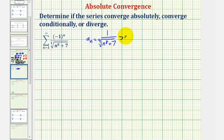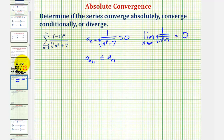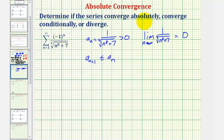Notice how a sub n is greater than zero. The limit as n approaches infinity of a sub n does equal zero. Now we check that a sub n plus one is less than or equal to a sub n: as n increases, the denominator increases, and therefore the fractions get smaller and smaller, so a sub n plus one is less than or equal to a sub n. By the alternating series test, this series is convergent. And since the summation of the absolute value of a sub n — which is the previous series — is also convergent, the alternating series is absolutely convergent.